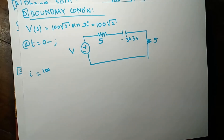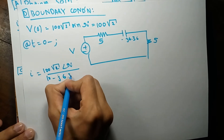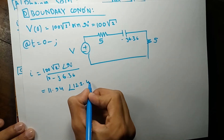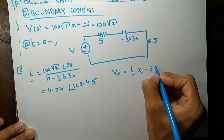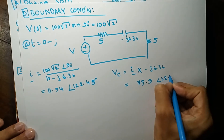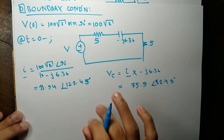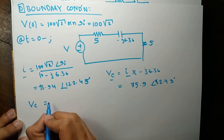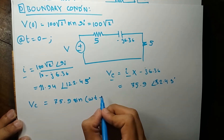The current supplied before switching is 100√2 ∠90° divided by (10 − j6.36), which equals 11.94 ∠122.45°. The voltage across the capacitor is this current phasor multiplied by −j6.36, giving 75.9 ∠32.45°. In the time domain, the capacitor voltage before t = 0 is 75.9·sin(ωt + 32.45°).